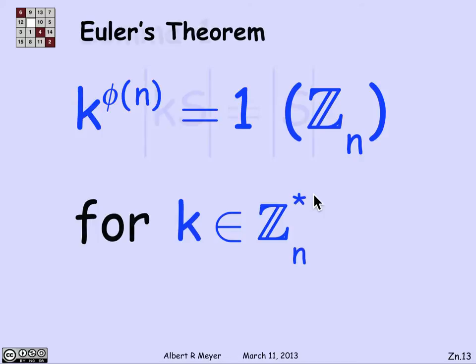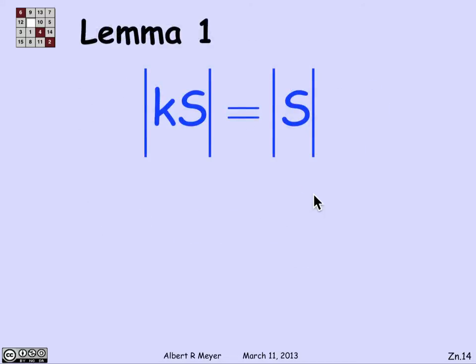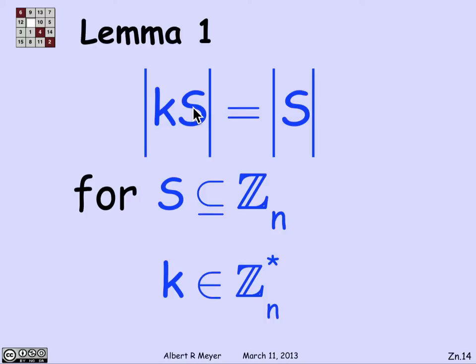And it's going to turn out that the proof of Euler's theorem is actually pretty easy. It just follows in a couple of steps from a couple of simple observations. So let's start on those. So the first remark is that if I have any subset S of elements in Z_n, I don't care whether they're relatively prime to n or not, if I multiply each of them by k, this notation for k times S means that I'm taking the set of elements that are of the form k times an element of S over all the elements of S.